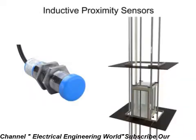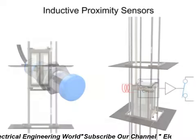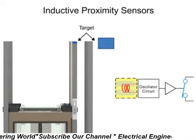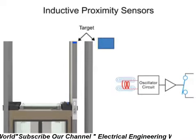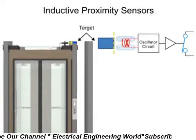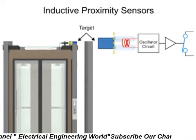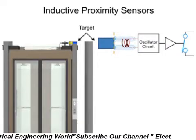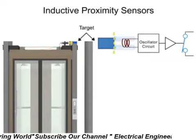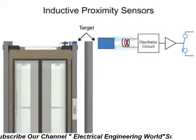Inductive sensors can detect a target from 0.5 mm to 40 mm. They only detect metallic targets and therefore use a magnetic field to detect its presence. When a ferrous metal material enters the magnetic field, electrical currents known as eddy currents are induced on the metal surface. These eddy currents induce a power loss within the oscillator circuit, and in turn cause a reduction in the amplitude of the oscillations. This is known as the eddy current killed oscillator principle.